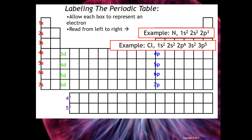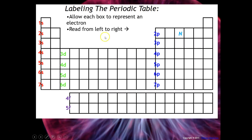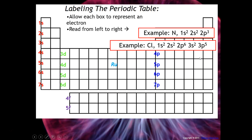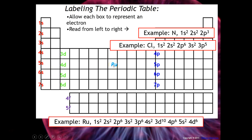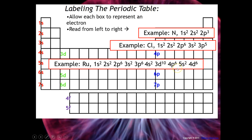You don't stop reading until you've reached the element you're writing the configuration for. Let's try a bigger one — ruthenium, Ru. It would be 1s2, 2s2, 2p6, 3s2, 3p6, 4s2, 3d — and you count 1, 2, 3 — noting that the d subshell can hold 10, which is 10 boxes — then 4p6, 5s2, and then 4d6. That's the configuration for ruthenium. See how easy that is?